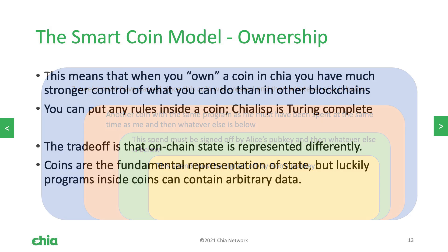What this means is, when you own a coin, you can impose layers of rules and program. You can put complex programs inside coins that you own. When you have a token in Chia, it's not just a registration on a smart contract — you can program it, you can put rules into it. The sense of ownership is much stronger.